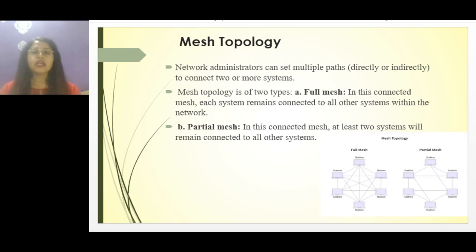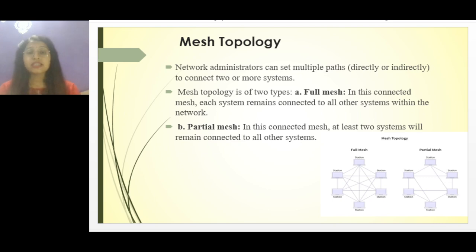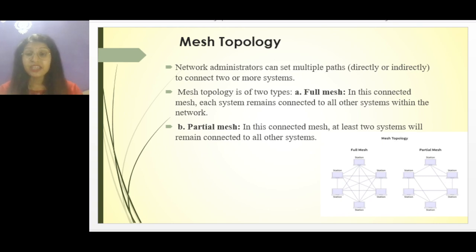Next, a very important topology is mesh topology. In mesh topology every component is connected — a network administrator can set up multiple paths to connect two or more systems. Mesh topology is of two types: full mesh and partial mesh. In full mesh, each system is connected to all other systems. In partial mesh, at least two systems are connected. The main advantage is that if a single device fails it does not impact the whole network; it is robust and fault is easy to identify.